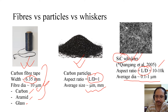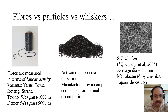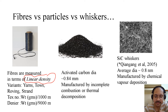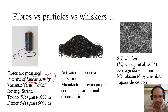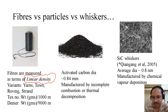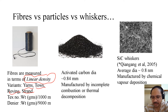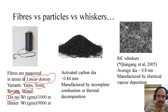Fibers are measured in terms of linear density. Regular density in SI units is kg per cubic meter — that is weight per volume — but linear density is kg per unit of distance. There are certain variants called yarns, tows, rovings, and strands, which we will discuss soon.